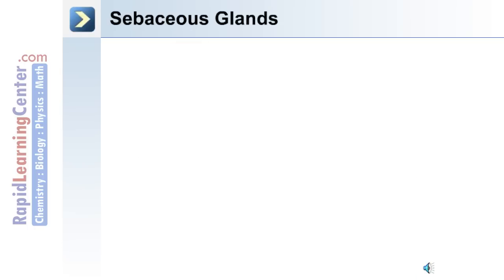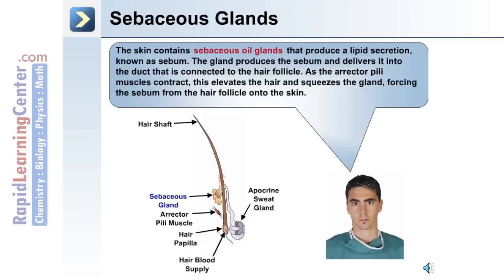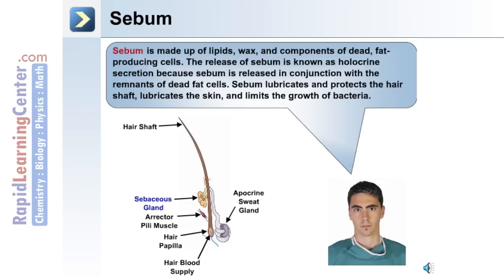The next derivative of the integument we will discuss are sebaceous glands. The skin contains sebaceous oil glands, and they produce a lipid secretion called sebum. The gland produces sebum and delivers it into the duct connected to the hair follicle. As the arrector pili muscle contracts, this elevates or raises the hair and squeezes the gland, forcing the sebum up onto the skin. Sebum is made up of lipids, wax, and components of dead fat-producing cells. The release of sebum is known as holocrine secretion, because sebum is released in conjunction with the remnants of dead fat cells. Sebum functions by lubricating and protecting the hair shaft, lubricating the skin, and limiting the growth of bacteria on the skin surface.